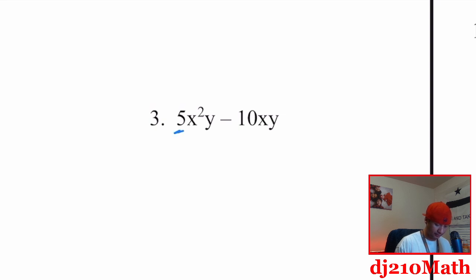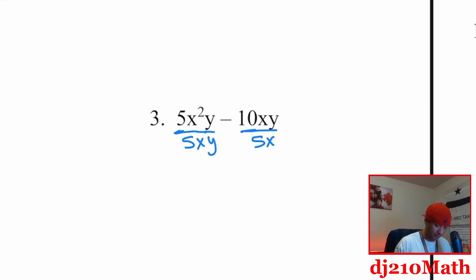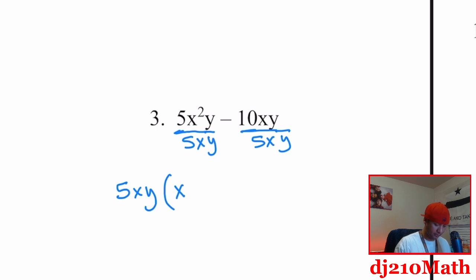Number three: five is common to both. There's two X's and then there's one X, so the most X's I can take out is a single X. And they each have a Y, so five X Y is what I'm taking out. Five divided by five is one, X squared divided by X is X, Y divided by Y is one. Then 10 divided by five is two, and X and Y go away.